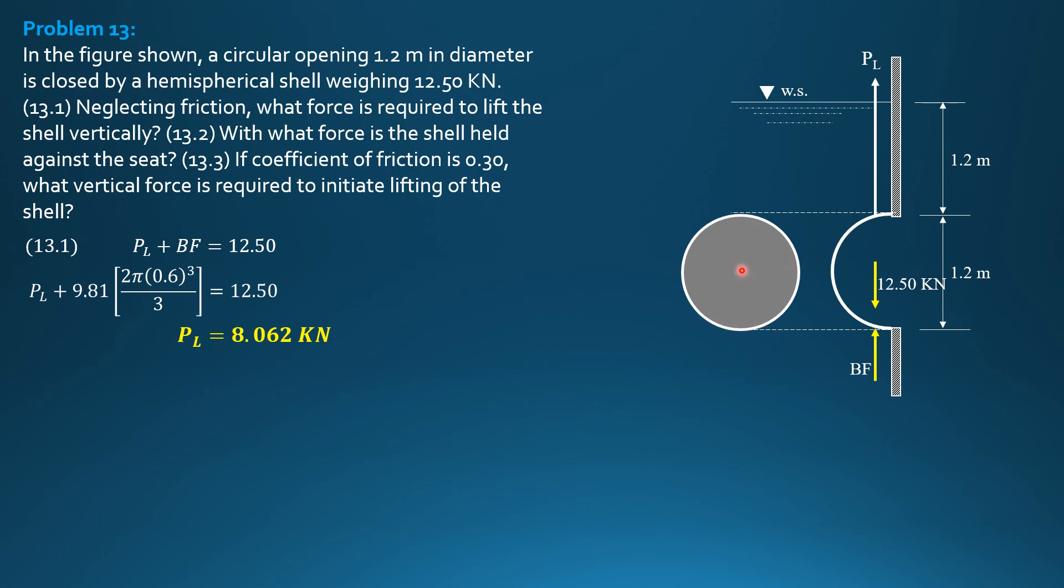The distance of the centroid of the circle to the water surface is barred H, which is 1.2 plus 1.2 over 2. That's barred H. Then, area is area of the circle. So, F equals specific weight of water, barred H, area.